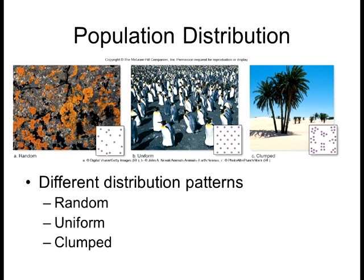A uniform distribution is the opposite — it's caused by competition for resources, and space is a resource as well. Penguins, as shown here, have that kind of uniform distribution. You'll find this even with plants: when plants get too close to one another, they start competing over space for roots, food, nutrients, and water. When a species tends to spread out and have a uniform distribution, there's usually some competition over a vital resource. It can also be territorial within the animal kingdom — animals typically do have territory issues.